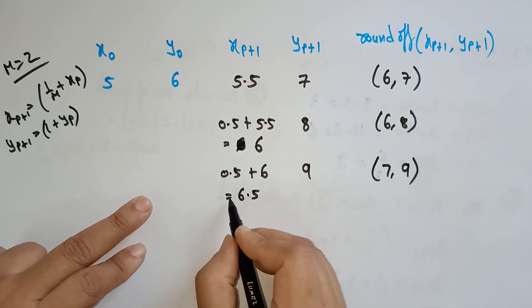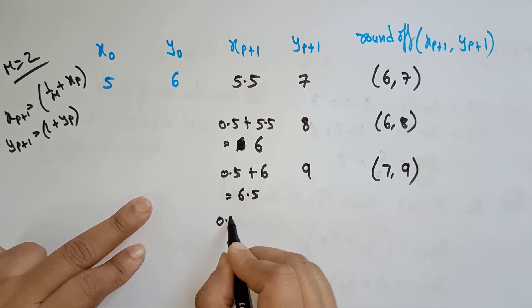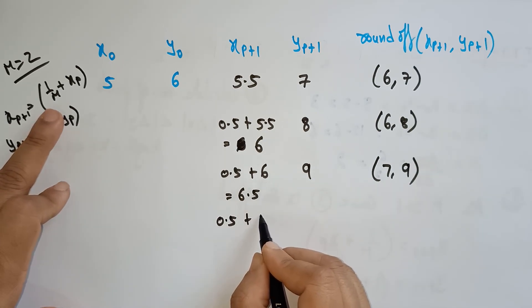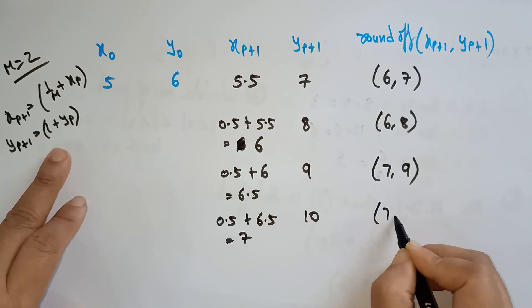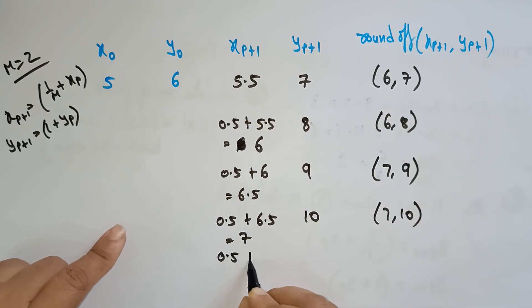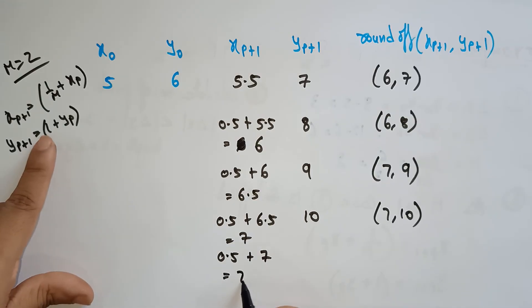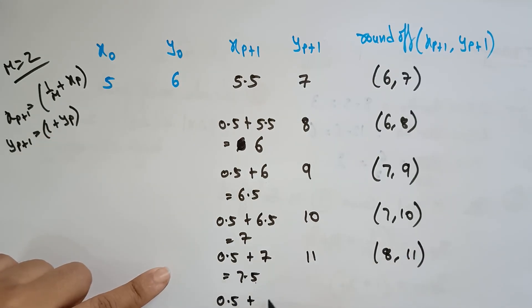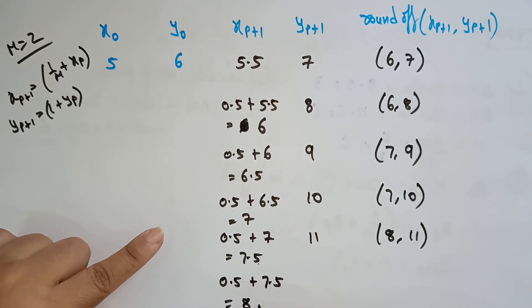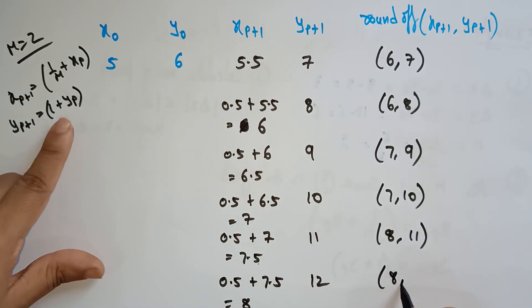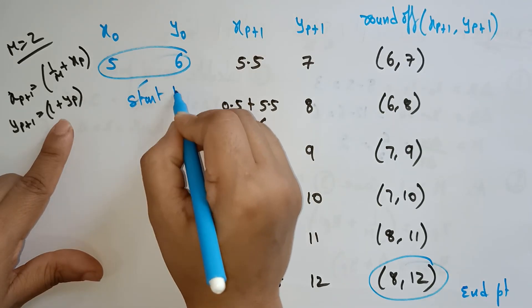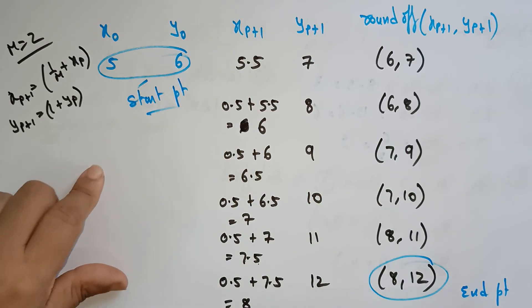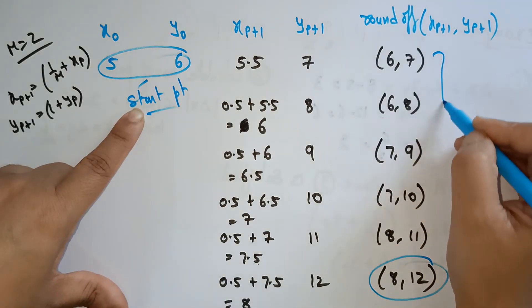Continuing: 0.5 + 7 = 7.5, yp+1 = 1 + 10 = 11 → rounds to (8, 11). Next: 0.5 + 7.5 = 8, yp+1 = 1 + 11 = 12 → (8, 12). We stop here because (8, 12) is our end point. So the points found between start (5,6) and end (8,12) are: (5,6), (6,7), (6,8), (7,9), (7,10), (8,11), (8,12).